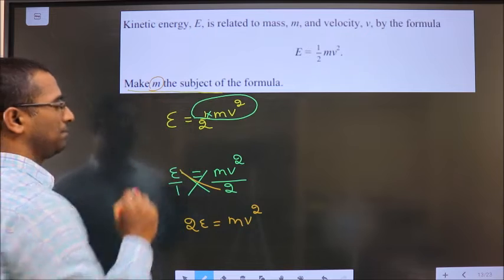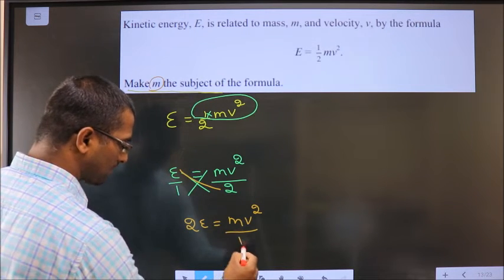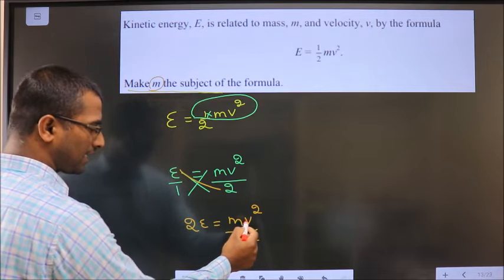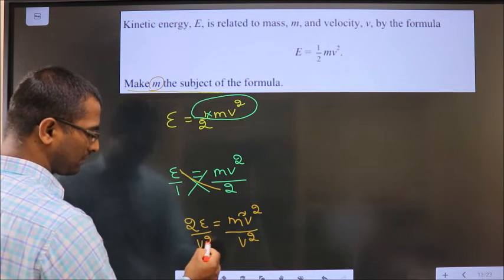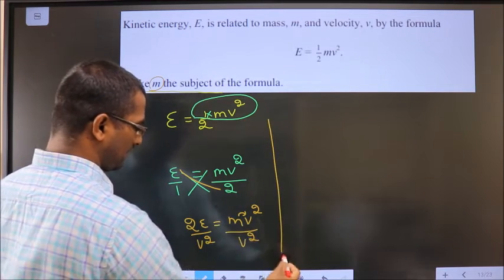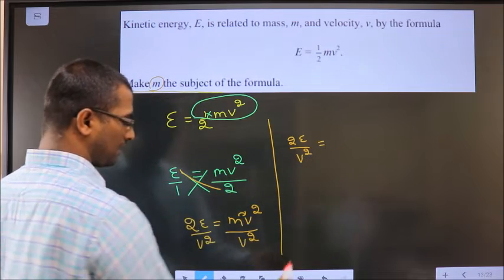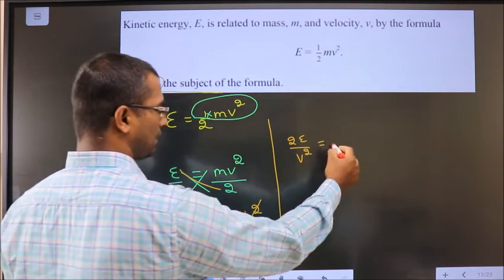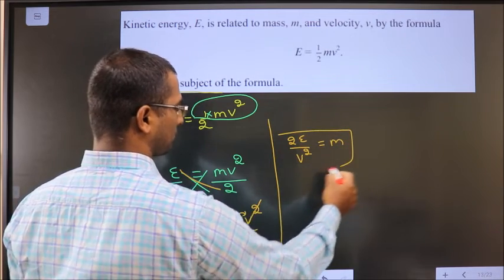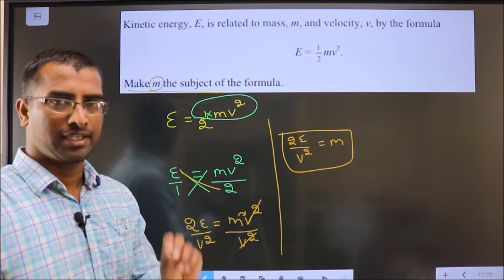You need to make M the subject. For that, divide by V squared. Whatever is connected to M, we are dividing by that. So that will give us 2E by V squared on this side, and on the other side V squared gets cancelled, leaving us with M. So I made M the subject.